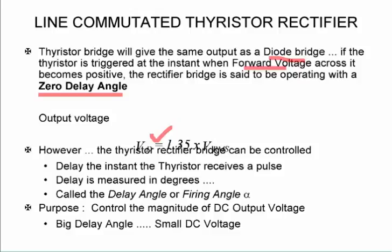However, we have a thyristor bridge because we can now control when we want to switch it on. And then we can delay that instant, and that delay is then measured in degrees and it's called the delay angle or the firing angle. And the purpose is to control the magnitude of the DC output voltage. So if we have a big delay we'll have a small DC voltage.